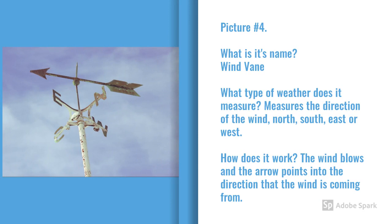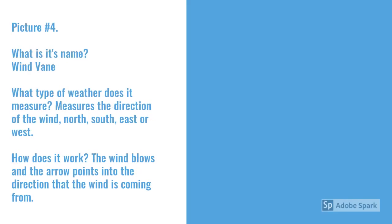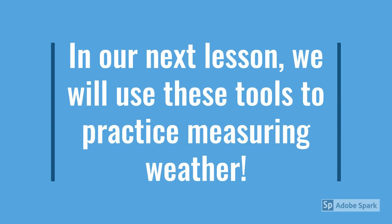Picture number four is called a wind vane. It measures the direction of the wind, either north, south, east, or west. The wind blows and the arrow will point into the direction that the wind is coming from. In our next lesson, we will use these tools to practice measuring weather.